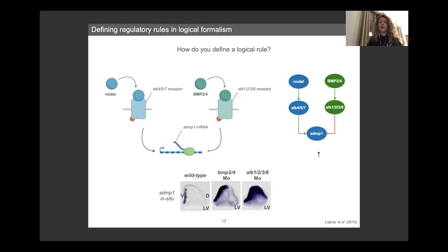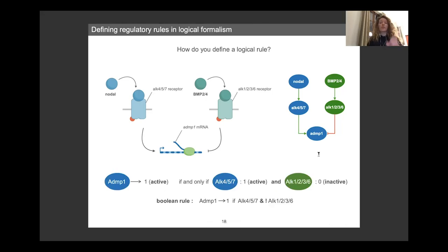And then for the ADMP1, we will translate this static GRN by building what we call regulatory rules in a Boolean formalism by translating this sentence where ADMP1 will tend toward a value of 1, meaning it will be an active node in the network. If the upstream ALK457 node is active, so also taking value 1, and the dorsal ALK receptor is inactive, so taking value 0. In a Boolean formalism, this is translated into those two different symbols. And doing so, for each of the elements of the network,